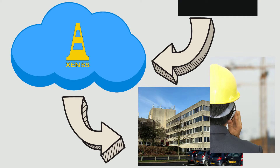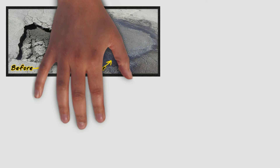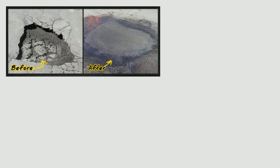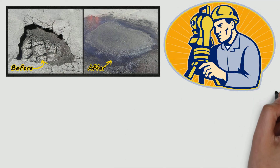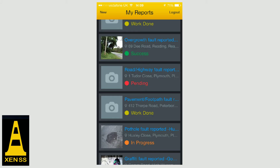They then have all the information they need to go and put things right. The contractor repairs the pothole and takes an image of the repair. This is then signed off as repaired and the date, time and contractor is logged.